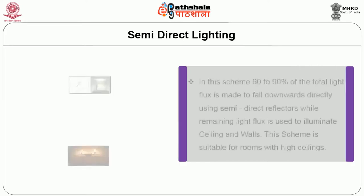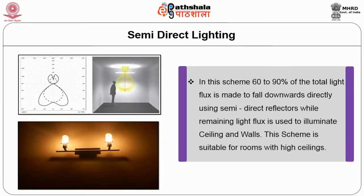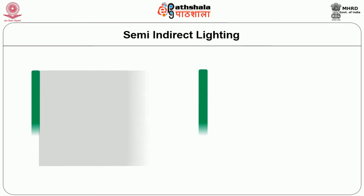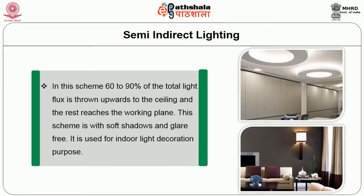Semi-direct lighting: in this scheme, 60 to 90% of total flux is made to fall downwards directly using semi-direct reflectors, while the remaining light flux is used to illuminate the ceiling and walls. This scheme is suitable for rooms with high ceilings. Semi-indirect lighting: in this scheme, 60 to 90% of the total light flux is thrown upwards to the ceiling and the rest reaches the working plane. This scheme has soft shadows and is glare-free, and is used for indoor lighting and decoration purposes.